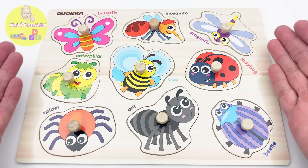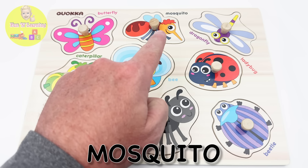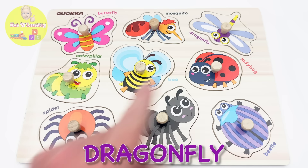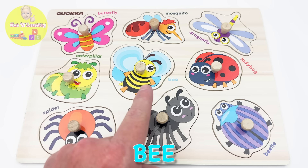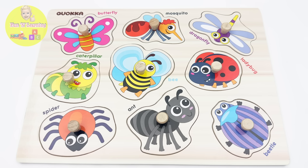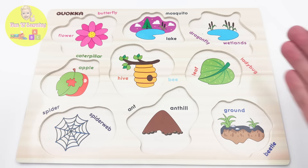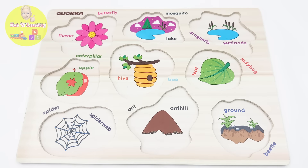Hello young learners, check out this awesome insect puzzle I have for you today! We have a butterfly, a mosquito, a dragonfly, a caterpillar, a bee, a ladybug, a spider, an ant, and a beetle. Wait, what's that sound? It's the wind! Oh no, all our insect friends are gone — that big gust of wind blew them away!